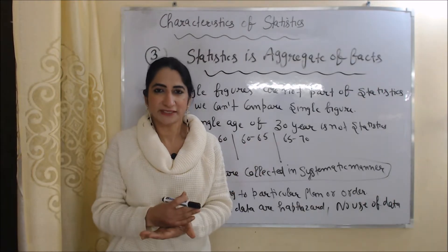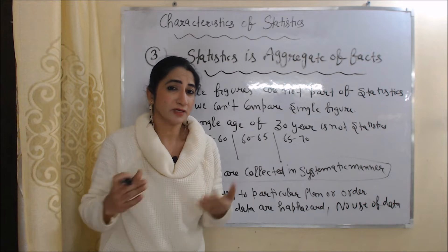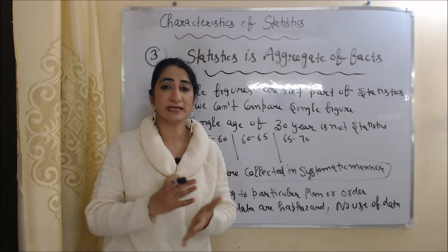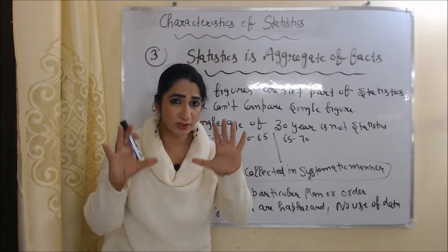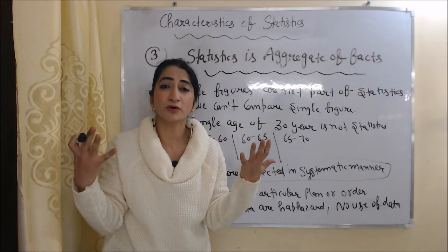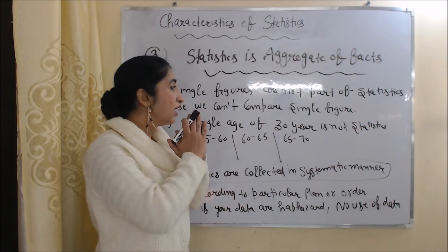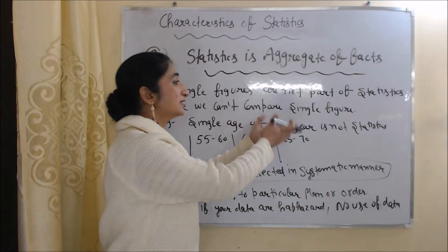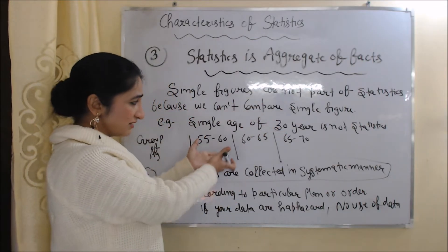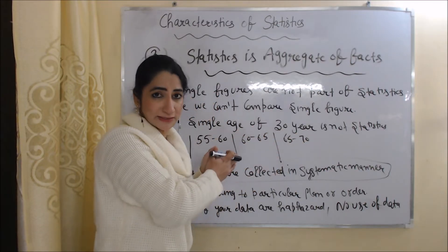The next characteristic is that statistics are an aggregate of facts. Single figures are not part of statistics because we cannot compare a single figure. In statistics, we do not include information about only one person — we include information about a group, because in a group we can easily compare one person with another. For example, a single age of 30 years is not statistics, but a group of ages like 55 to 60, 60 to 65, and 65 to 70 years are part of statistics.